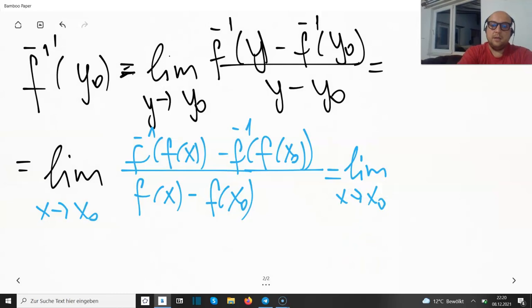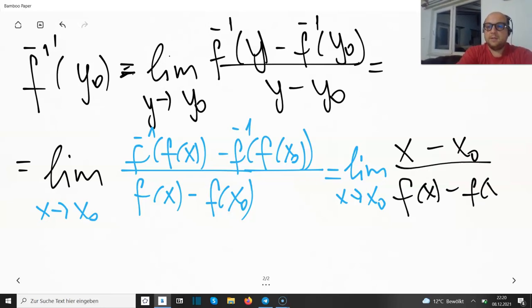So that means here we have only x, here we have only x₀, and we are dividing by f(x) minus f(x₀). Well, that's nice because it looks like the derivative by the first principle.